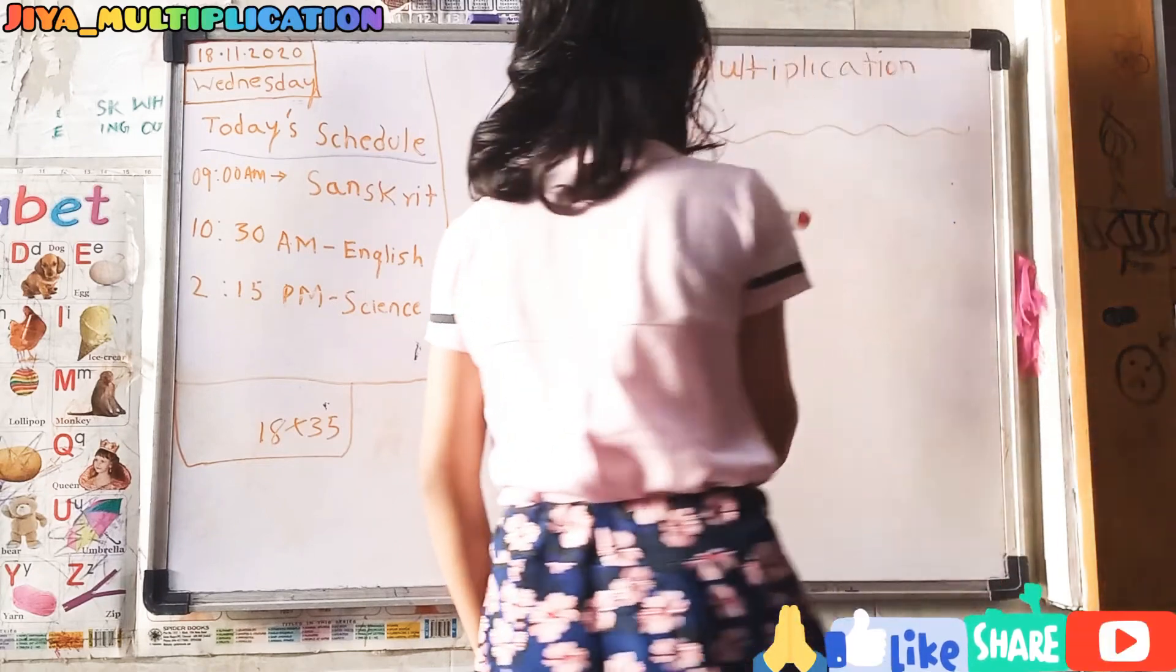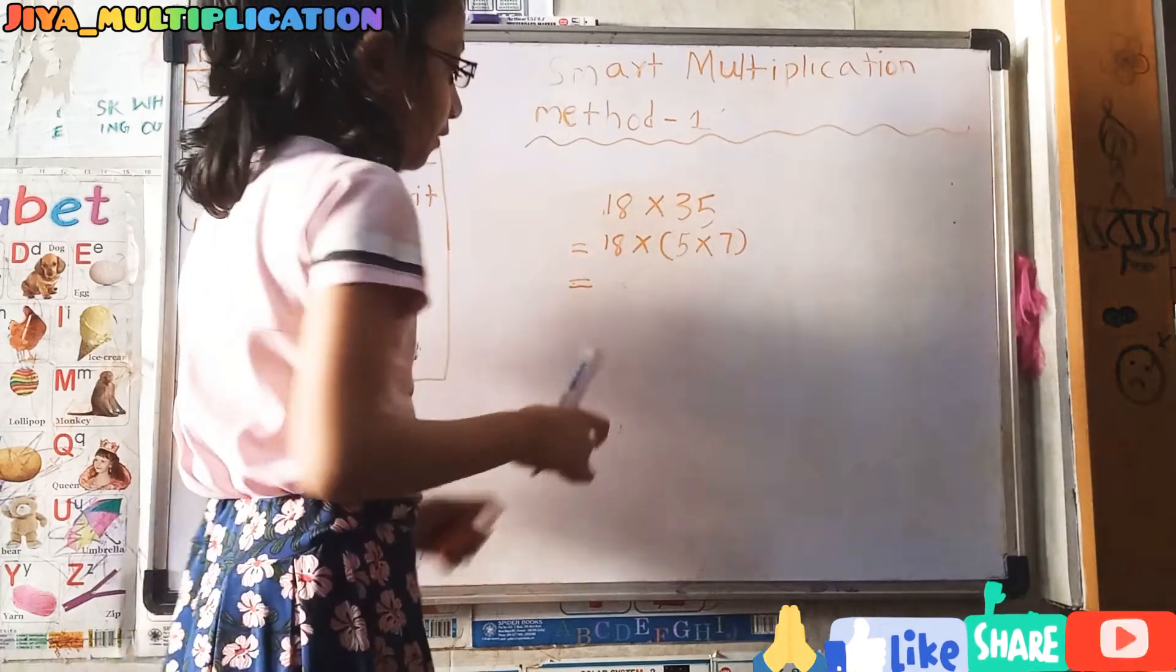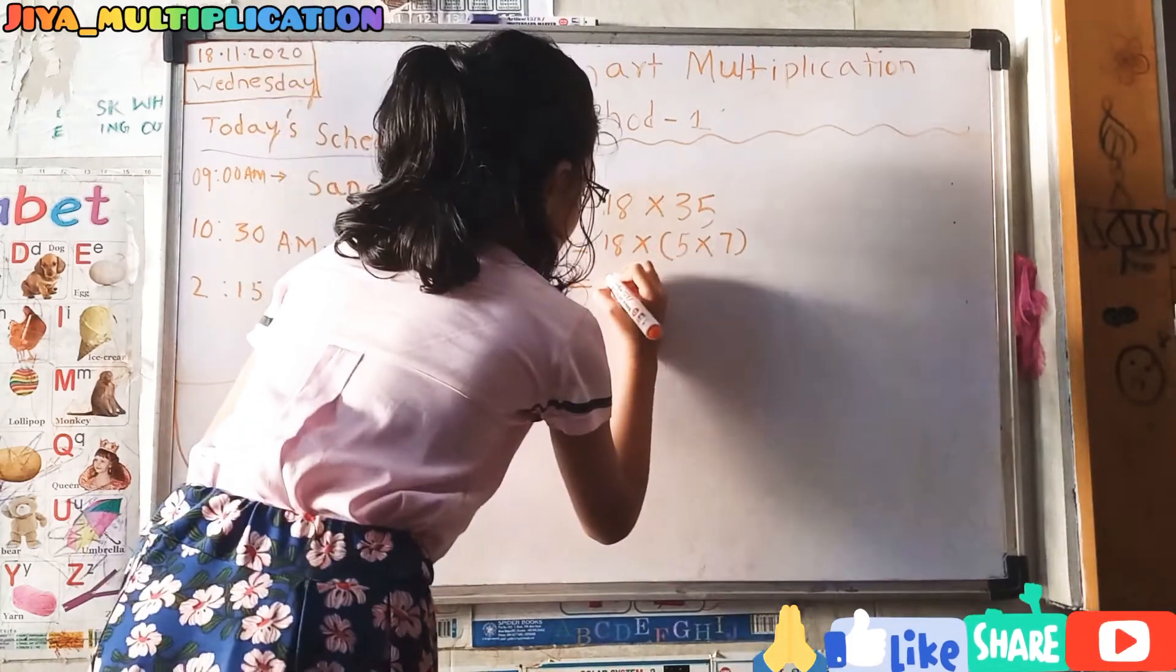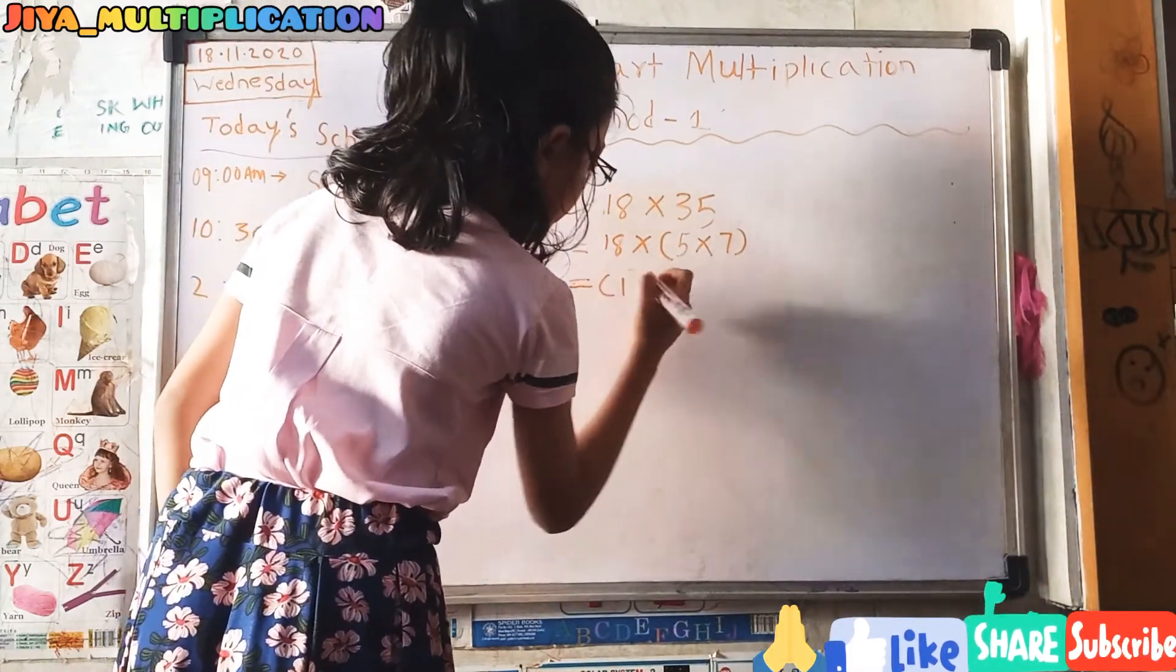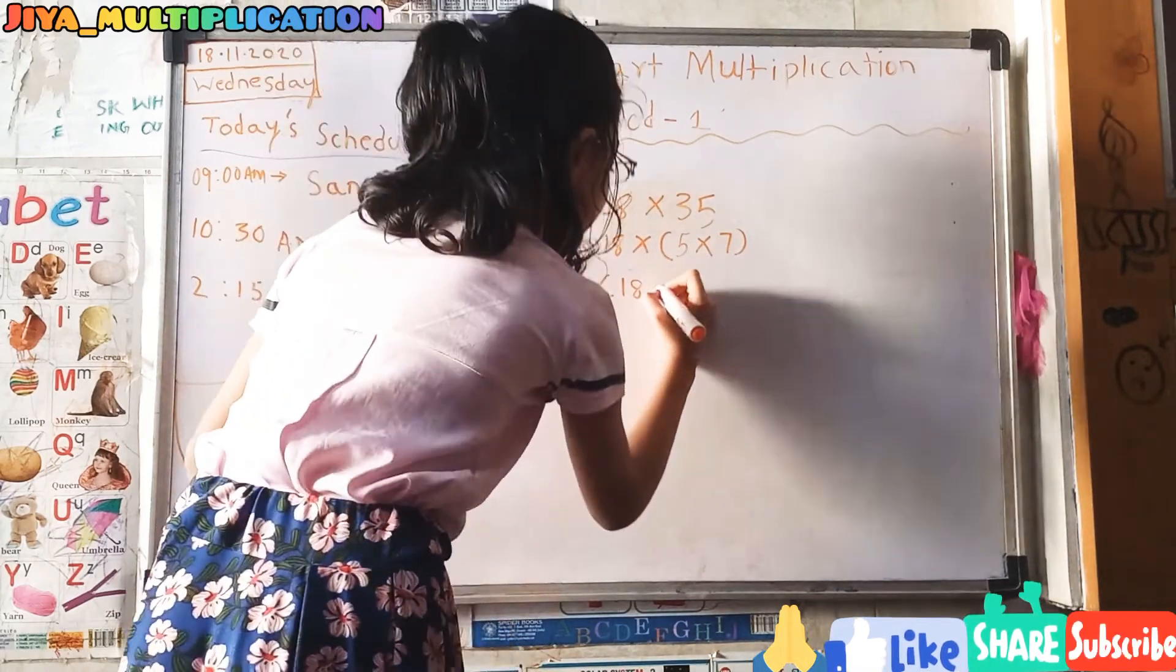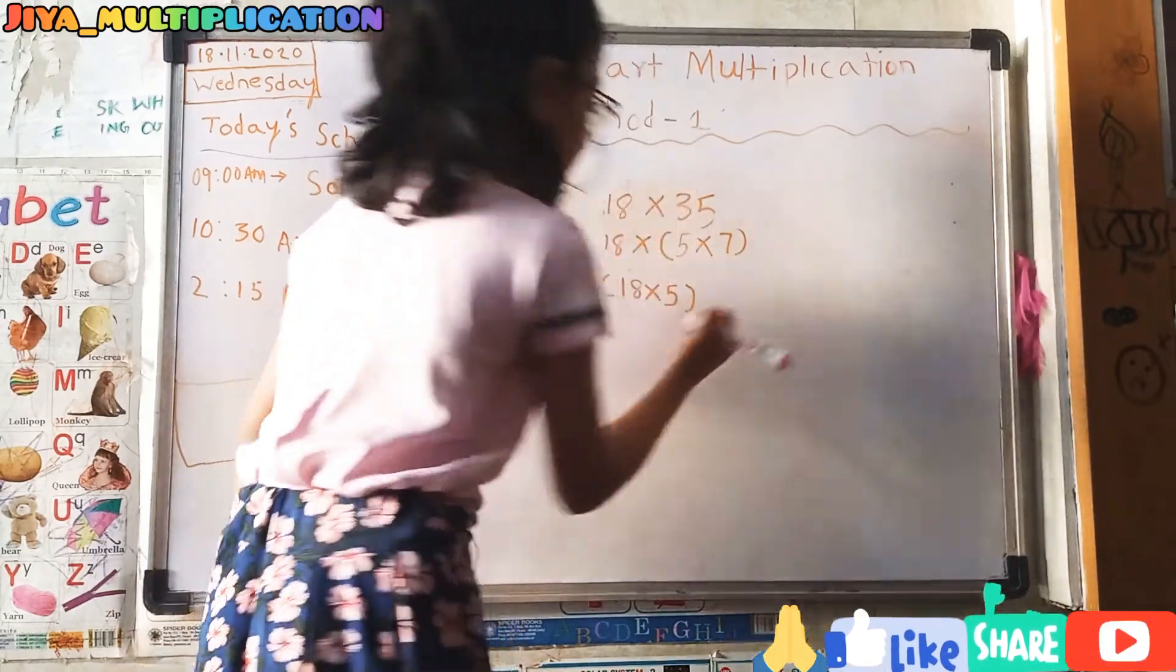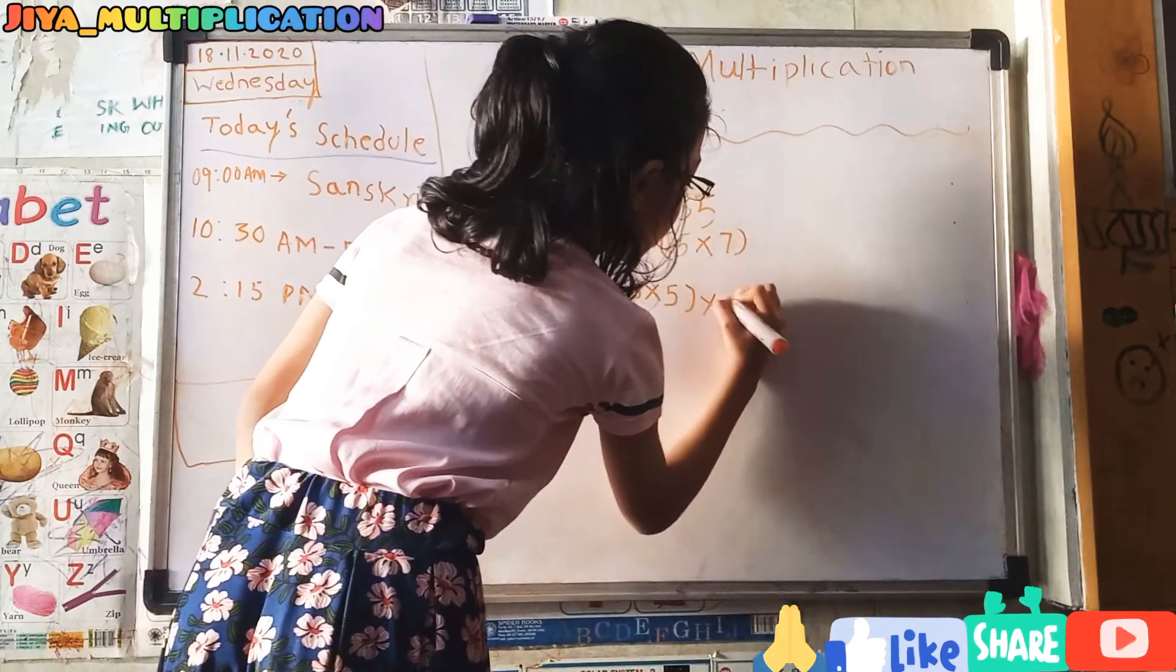Here again I gave it equals, and we should change the bracket and write 18. 18 into 5 and give it closing bracket, and we should do into 7.